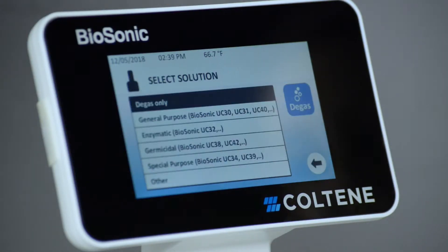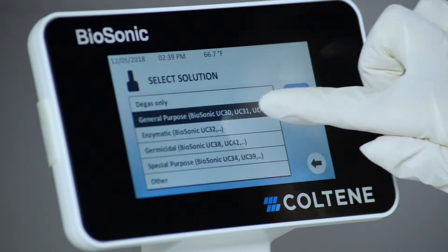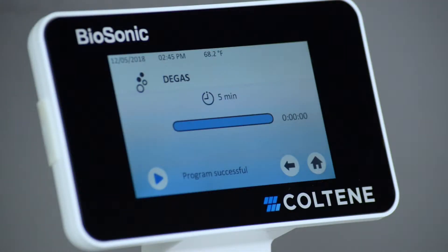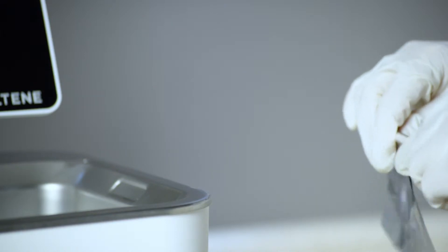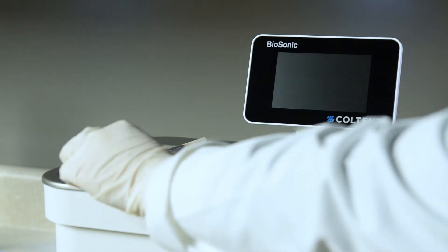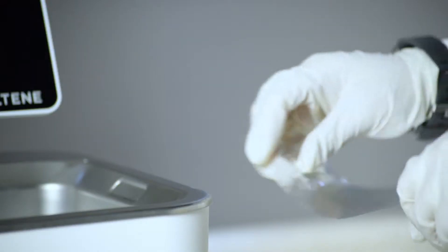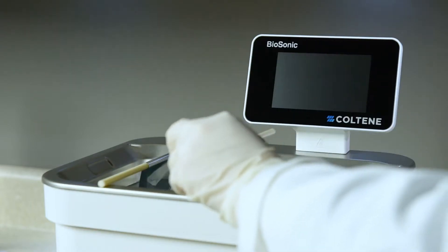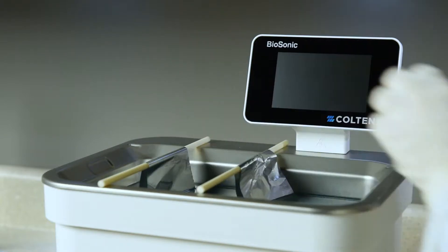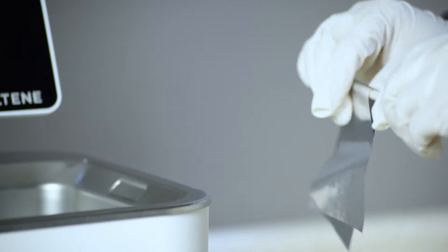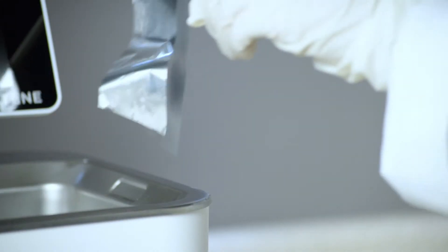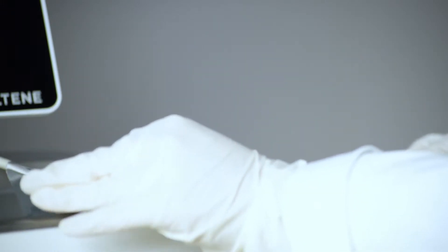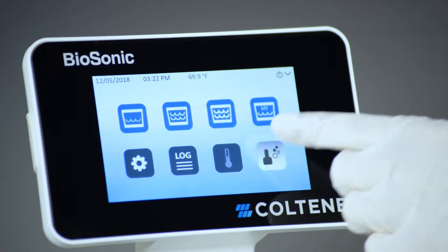Run the unit for five minutes to degas the solution. Using three rods, suspend three pieces of foil in the solution, making sure the edge of the foil is approximately six millimeters, a quarter inch, from the bottom and sides of the tank. Aluminum foil should not come in contact with the bottom or sides of the tank. Run the unit for a five-minute cycle.